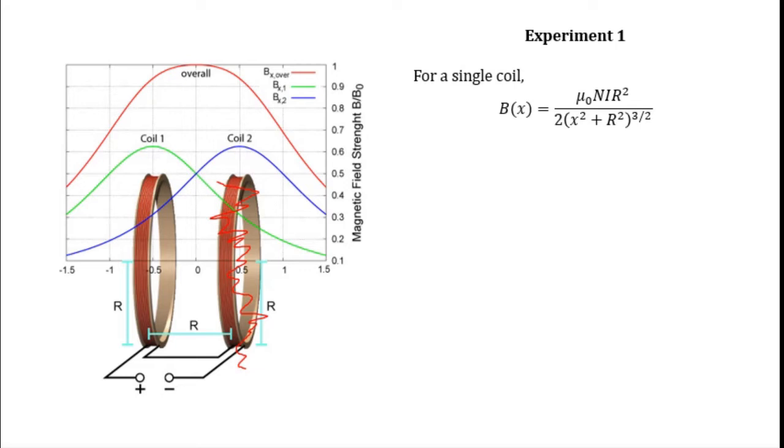For a single coil, the magnetic field strength B as a function of x position is given in the slide. It has a Gaussian shape.